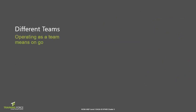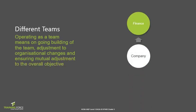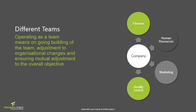Operating as a team means an ongoing building of the team, adjustment to organizational changes, and ensuring mutual adjustment to the overall objective. Each department within an organization is a team, as they are working towards a common goal. Common teams found in business are finance, human resources, sales, marketing, quality control, IT, and others you may have encountered.